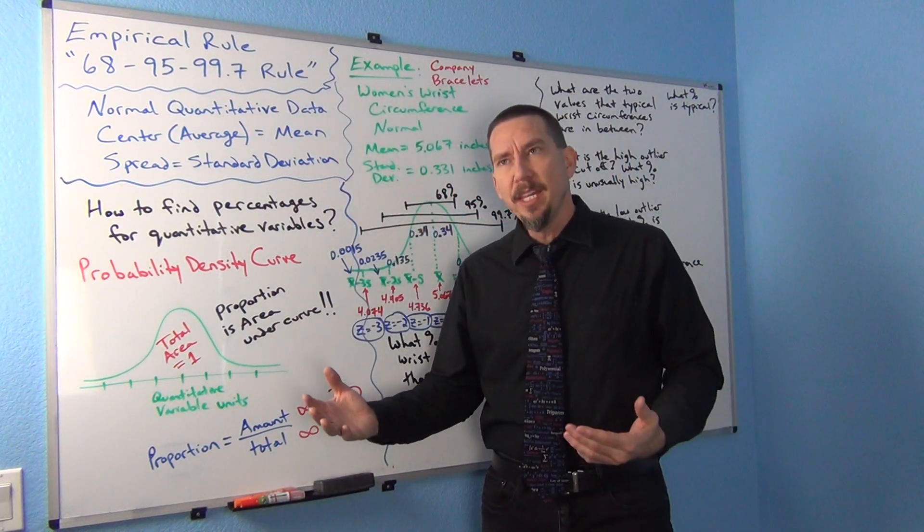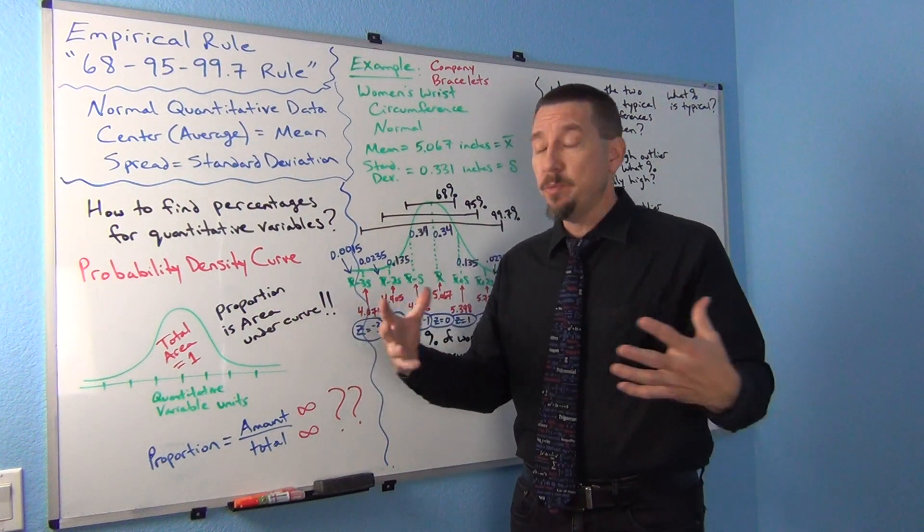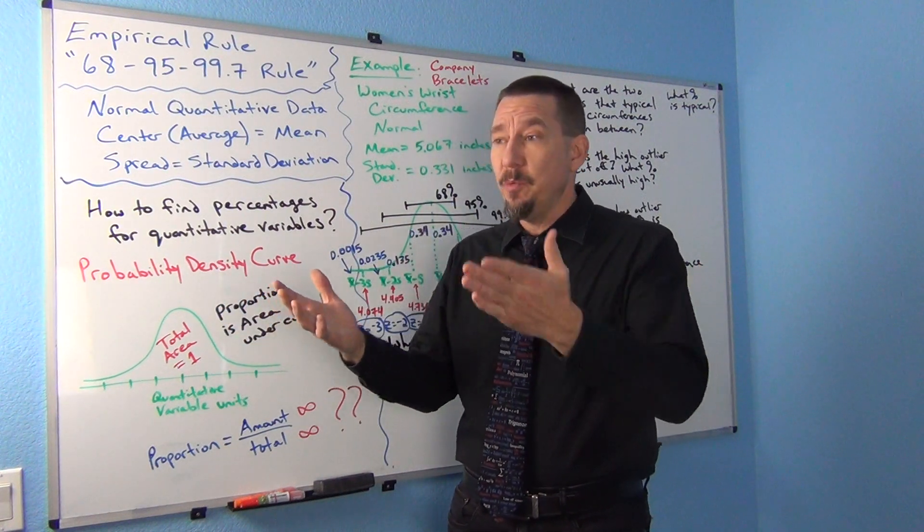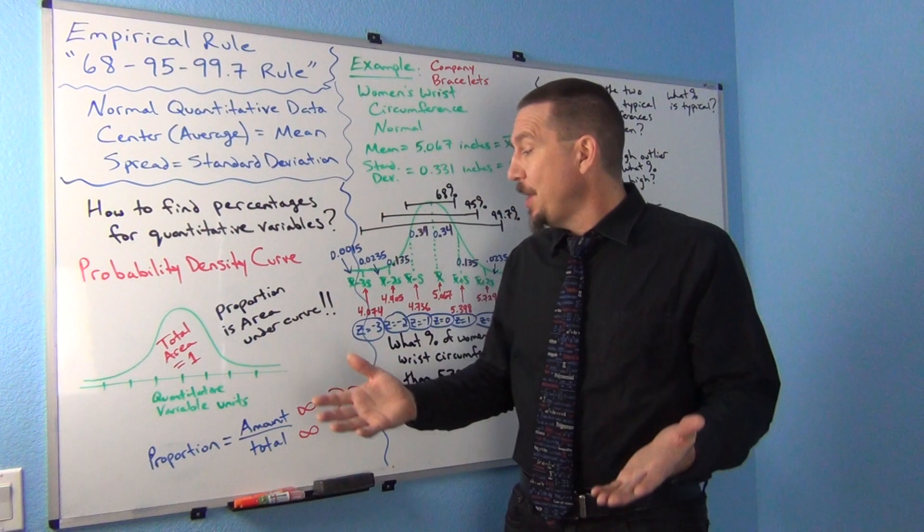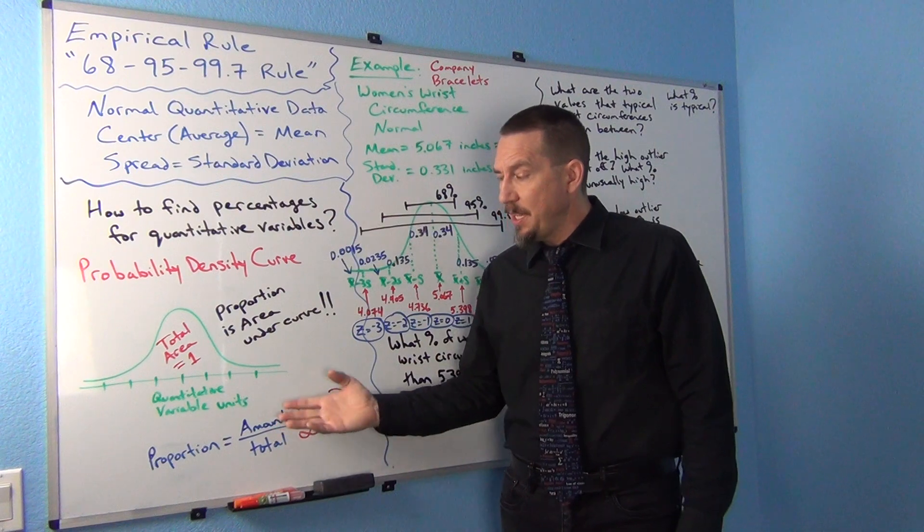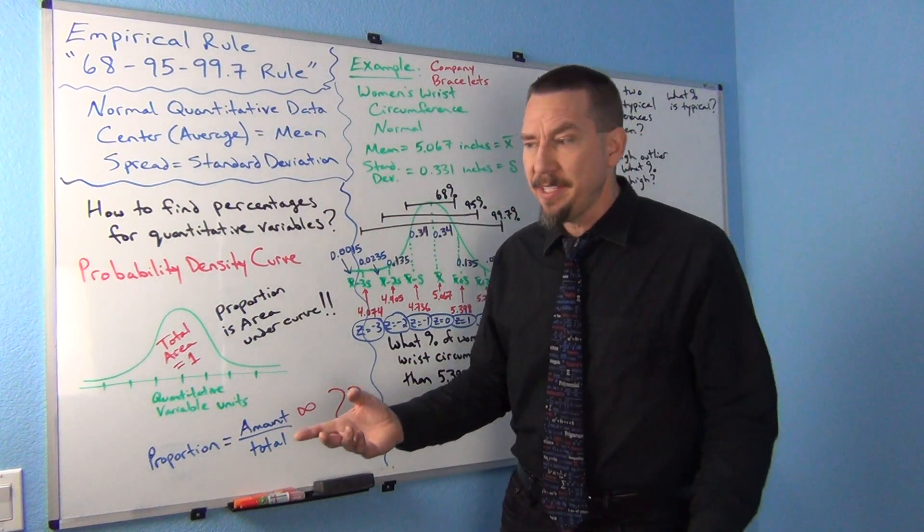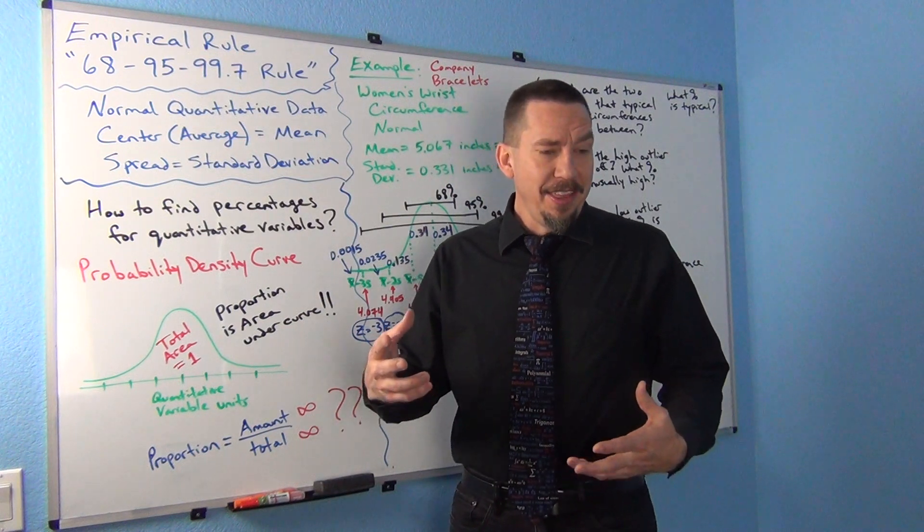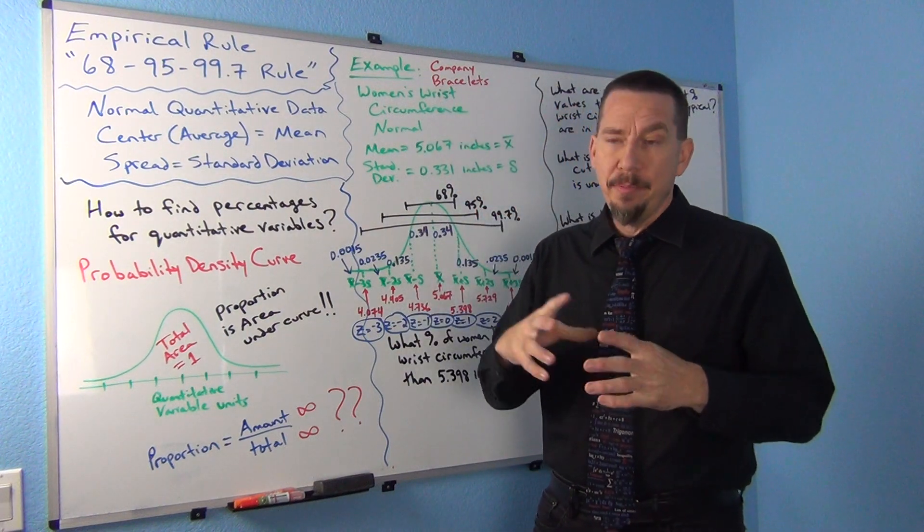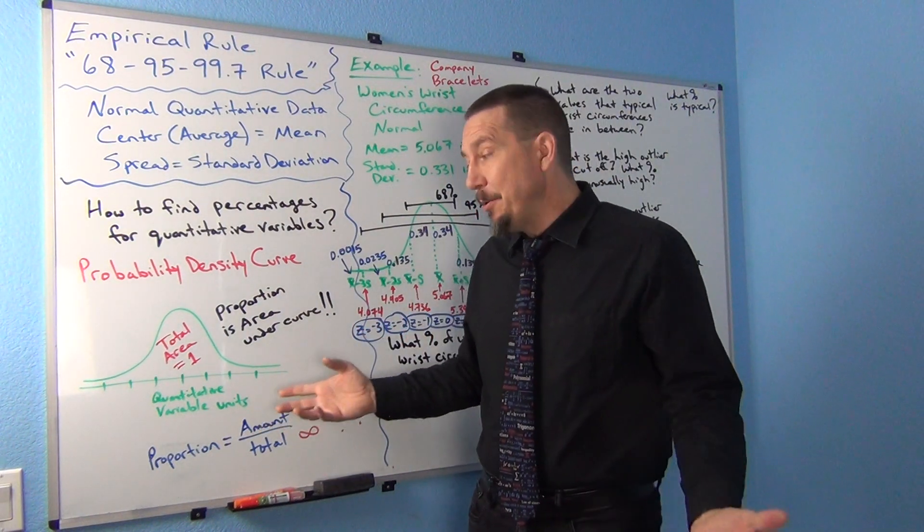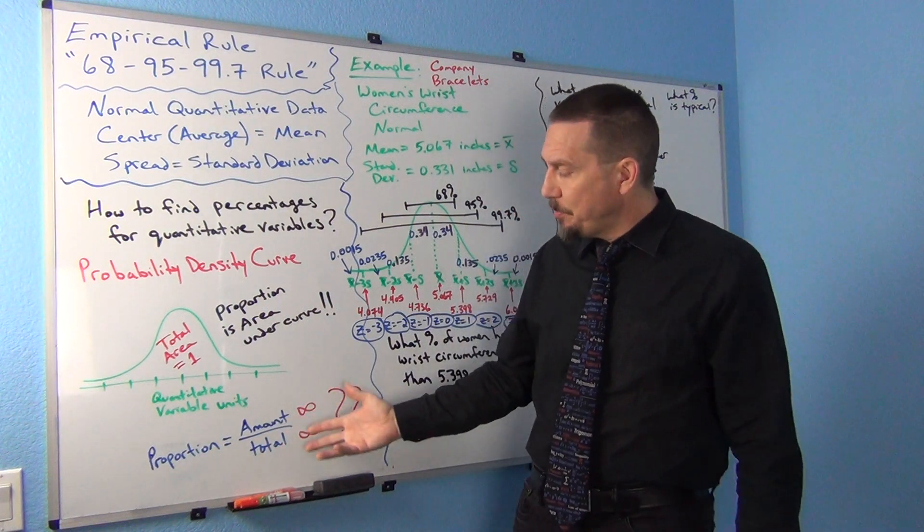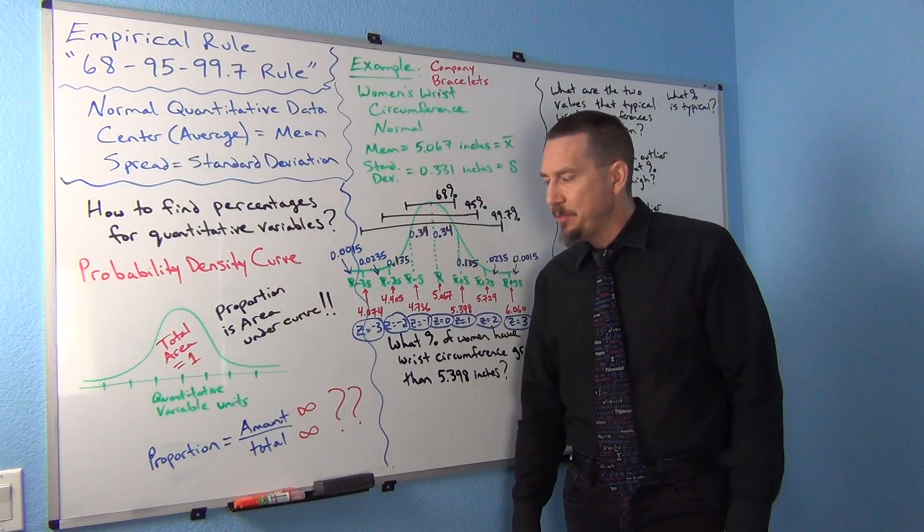Mainly because quantitative data is infinite, right? It's infinite and continuous. So there's infinitely many numbers just between one and three. So there's infinitely many possibilities between one kilogram and three kilograms. So it makes it very difficult to use things like amount out of total. So it becomes very problematic sometimes to deal with amount out of total.